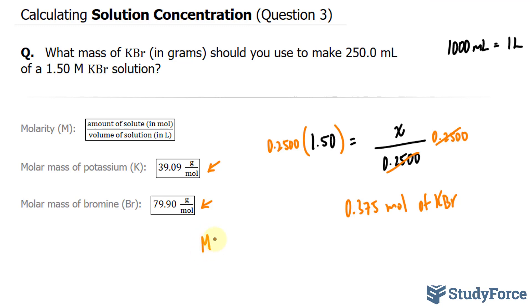Molar mass is 118.99. The way you can distinguish between molar mass and molarity is oftentimes, in textbooks, they will represent molarity with the letter C, or they'll represent molarity with M surrounded by square brackets.